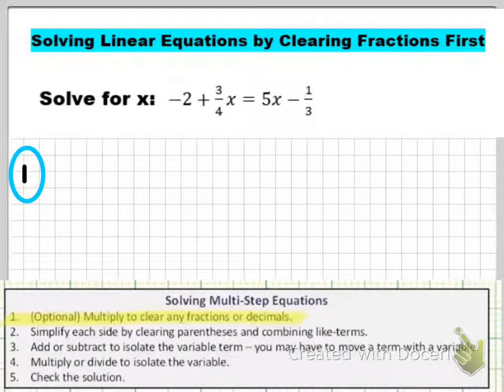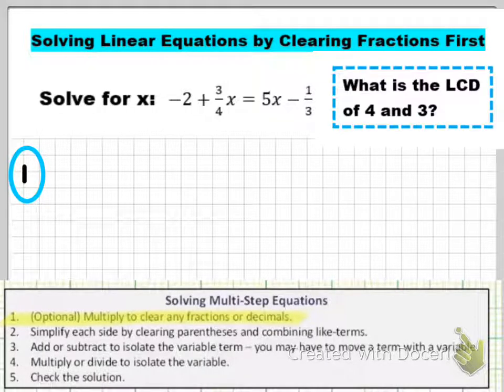Before I can accomplish step one, I need to figure out how am I going to clear these fractions. It's not just magic. I don't just snap my fingers and they go away. I have to figure out the LCD. So I look at the denominators of the fractions. I have 3/4 and 1/3, so my denominators are 4 and 3. I need to know what the LCD of 4 and 3 is. Well, I know that it's 12. That's the number I use to clear the fractions.